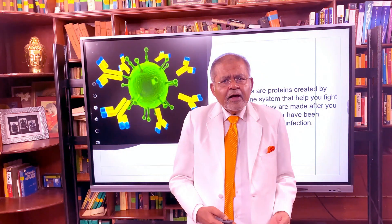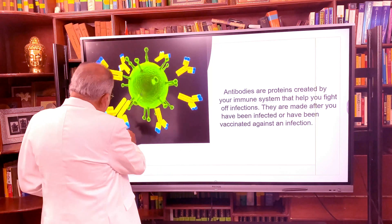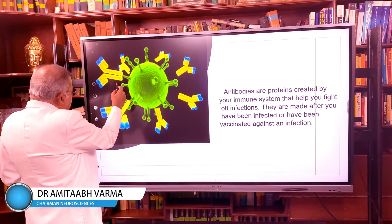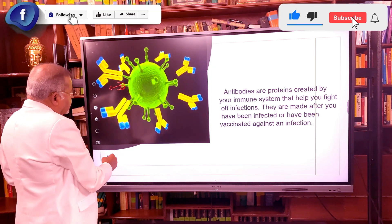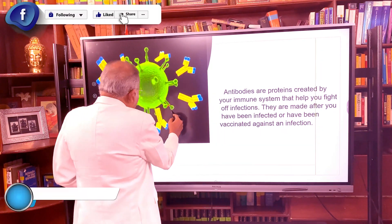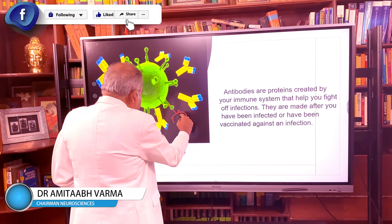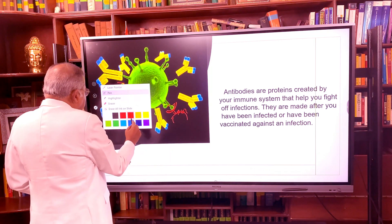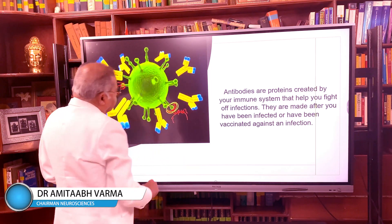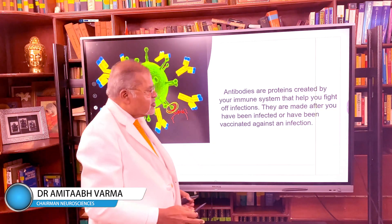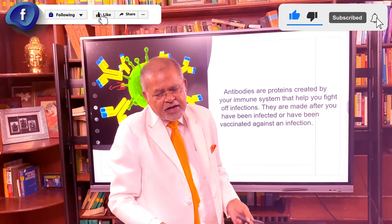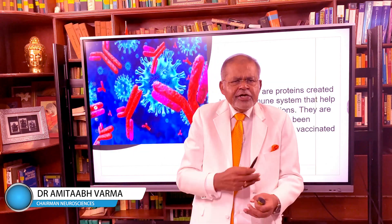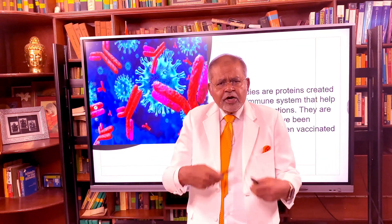With the Delta variant, there are about 20 antibodies that try to block it. You can see the spike protein — antibodies try to block it so the virus cannot enter the cell. The coronavirus tries to enter another cell via ACE2 receptors, but it cannot if it is blocked. Antibodies are proteins created by your immune system that help fight off infections. They are made after you've been infected or vaccinated.